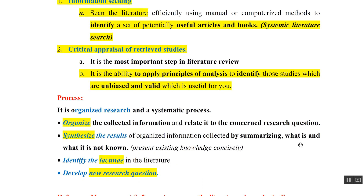What is the exact process of literature review? First, it is a very systematic and organized research process. We collect the information, then organize it and relate it to our concerned research question. The second step is we synthesize the result of this organized information by making a summary, putting what is known and what is not known about the topic. That's how we come to know the lacunae in current literature, which helps us to develop a new research question.